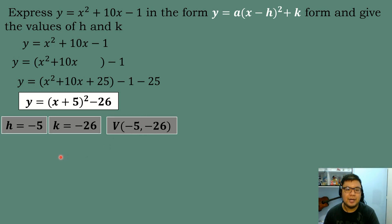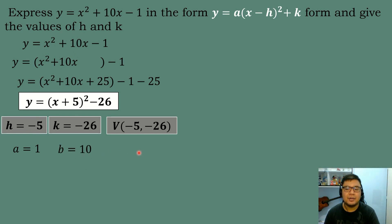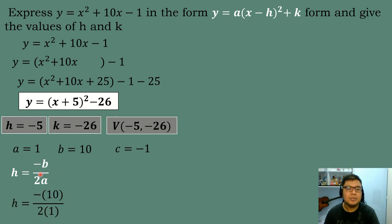Another method is to use the formula. Identify the numerical coefficients: a = 1 for x², b = 10 for the linear term, and c = −1 for the constant term. Using the formula h = −b / 2a, substitute the values: h = −10 / (2 × 1). Negative 10 divided by 2 equals negative 5. So h = −5.